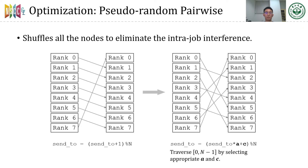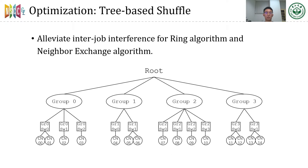The first optimization is pseudo-random pairwise. It shuffles all the nodes to eliminate the intra-job interference. Directly shuffling by randomly exchanging two elements in the node list is easy to understand but requires extra space. A faster and simpler method is shown in the right figure: if we select A and C properly, it can traverse nearly randomly from 0 to N-1. The next destination can be calculated easily by multiplying A, adding C, and then taking mod N.